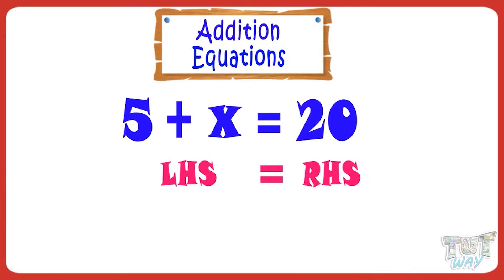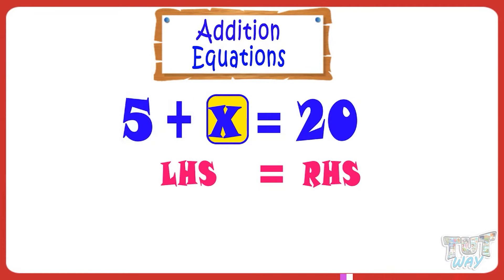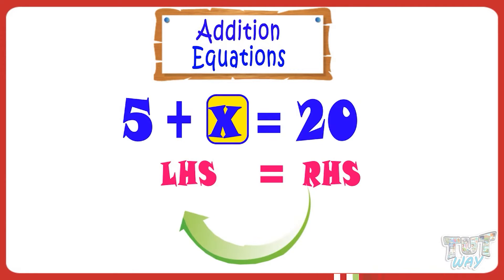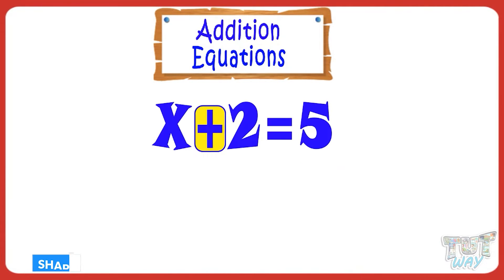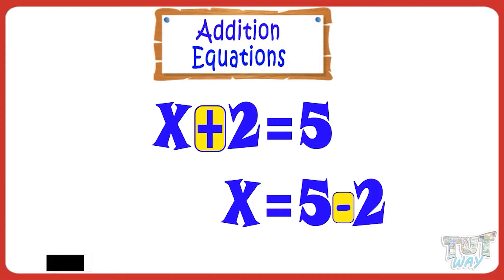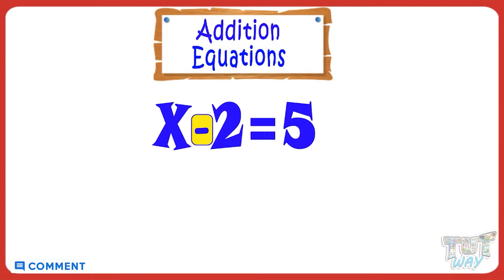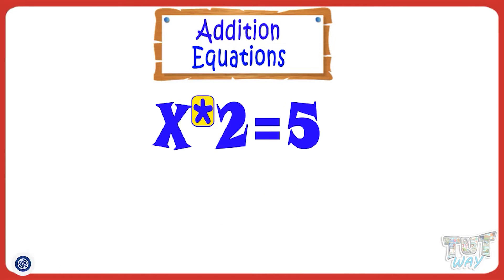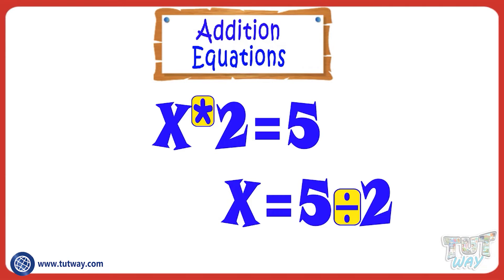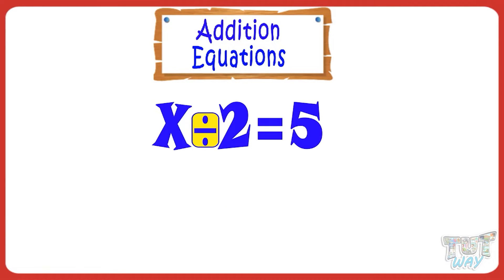Now, let's learn how to solve equations to find the value of X. Let X be on LHS, and shift the other number to RHS. While doing this, remember: whenever we shift any number from LHS to RHS or RHS to LHS, we have to reverse the sign — plus becomes minus, minus becomes plus, multiplication becomes division, and division becomes multiplication.